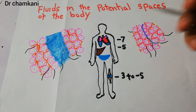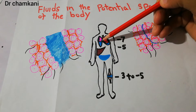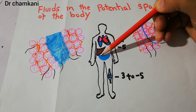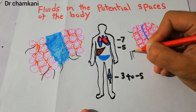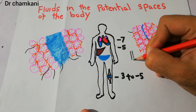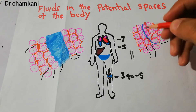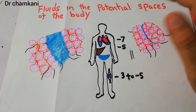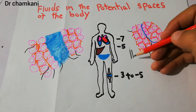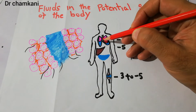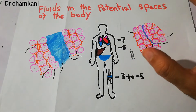Why does fluid accumulation occur in the potential spaces? The pleural cavity, pericardial cavity, and peritoneal cavity — all these cavities are basically made of two layers. There is a thin film of a small amount of fluid present between them, which allows the organ to move in the cavity. But normally, there is no actual space — there is a potential to accumulate fluid and become a proper space. Both layers exist in the lung's pleural cavity, the pericardial cavity, the peritoneal cavity, and similarly in the synovial cavity.